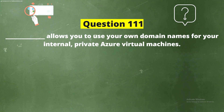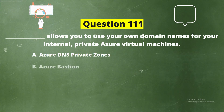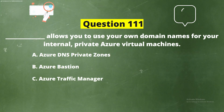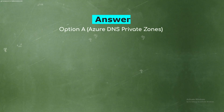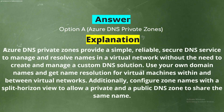Question 111: Fill in the blank — dash allows you to use your own domain names for your internal private Azure virtual machines. The correct answer is Option A: Azure DNS Private Zones. Azure DNS Private Zones provide a simple, reliable, secure DNS service to manage and resolve names in a virtual network without creating a custom DNS solution. You can use your own domain names and configure zone names with a split-horizon view to allow a private and public DNS zone to share the same name.